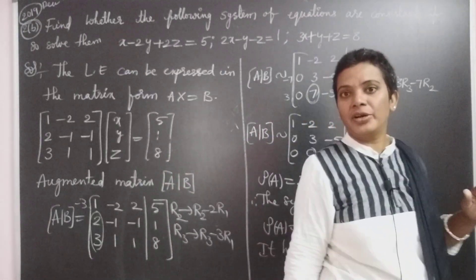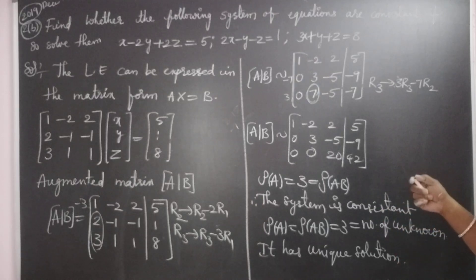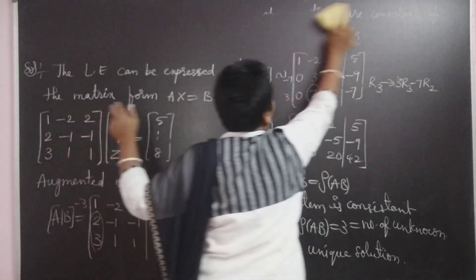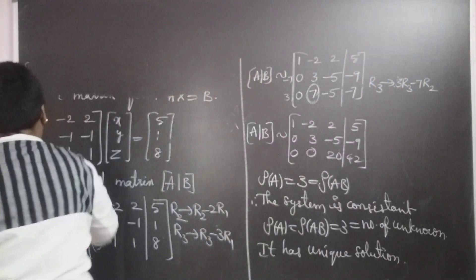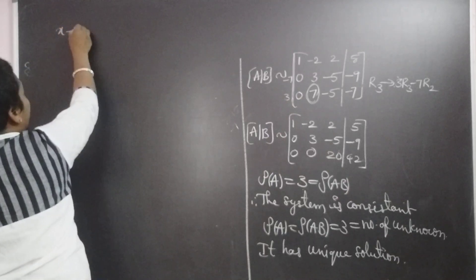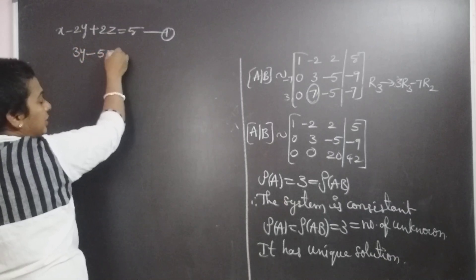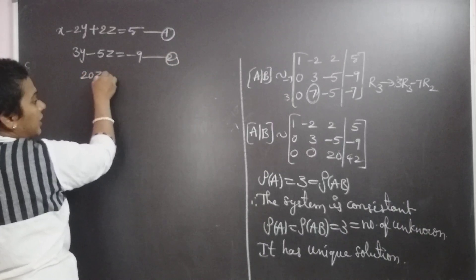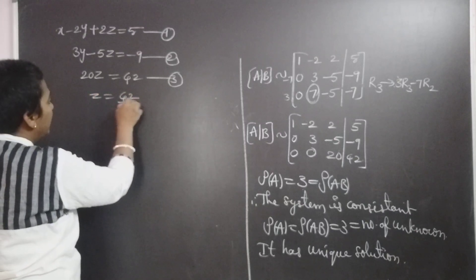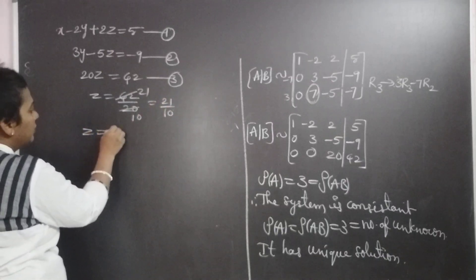Since it has a unique solution, we express the augmented matrix [A|B] back as linear equations in X, Y, Z. The first equation is X − 2Y + 2Z = 5. The second equation is 3Y − 5Z = −9. The third equation is 20Z = 42. From the third equation, Z = 42/20 = 21/10.